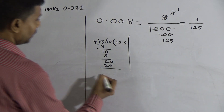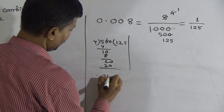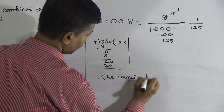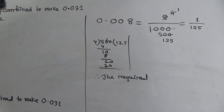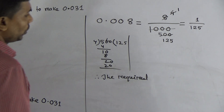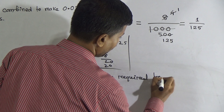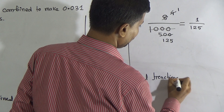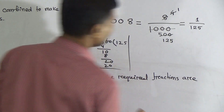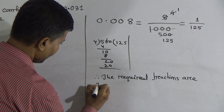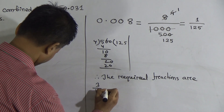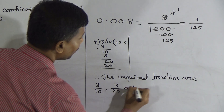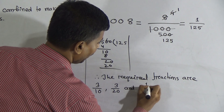Therefore, the required fractions are 3 by 10, 3 by 20, and 1 by 125.